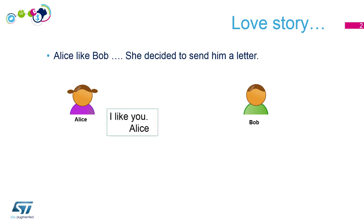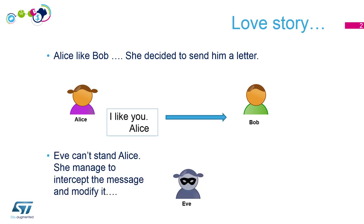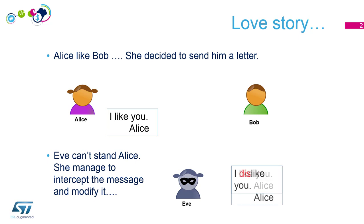She writes 'I like you', signs Alice, and sends this to Bob. Unfortunately we've got Eve, and Eve can't stand Alice. So she managed to intercept this message, modified it to 'I dislike you', and keeps the signature of Alice and sends this to Bob. What a shame.